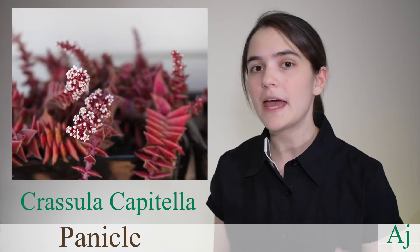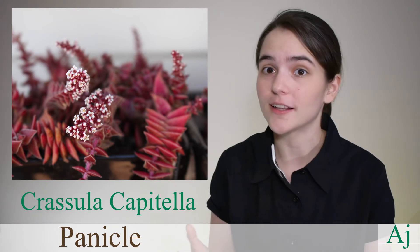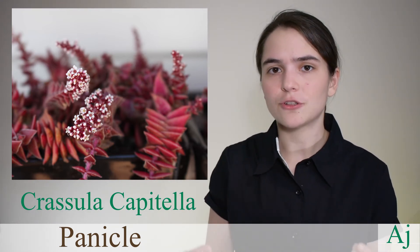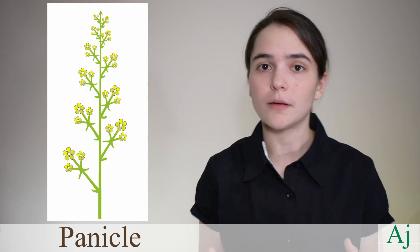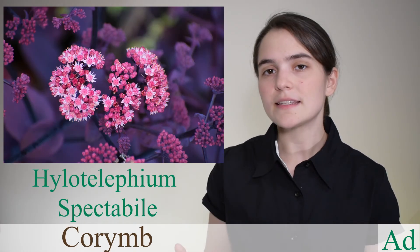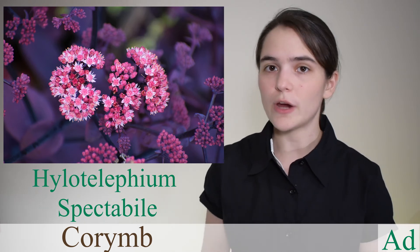For example, a panicle, which is a branched flower cluster with the separate flowers attached by short equal stalks at equal distances along a main stem. A corymb is similar to a panicle with the same branching structure, but with the lower flowers having a longer stem making a flattish top.